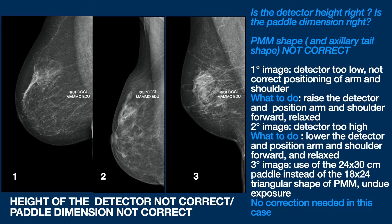Let's start with these examples. The first image does not even look like an MLO. It has cut off the superior portion. The detector is too low — that is to say, the patient is too high on the detector — and the axillary tail is not well stretched forward. It should form a kind of triangle. This is how it should have been.